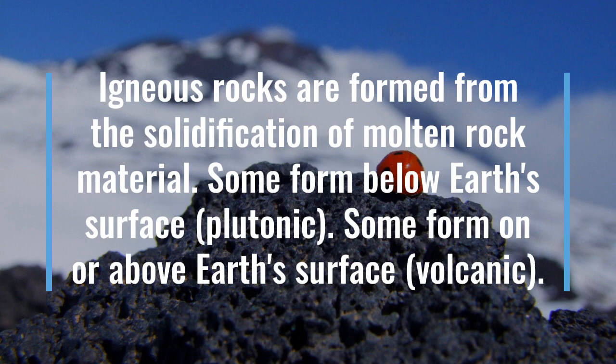Igneous rocks are formed from the solidification of molten rock material. Some form below Earth's surface — these are called plutonic rocks — and some form on or above Earth's surface, and these are called volcanic rocks.